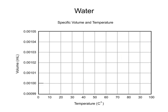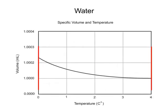When you zoom in on the graph between 0 and 4 degrees Celsius, you'll notice that there is no expansion in this range. In fact, there's a slight decrease in volume.